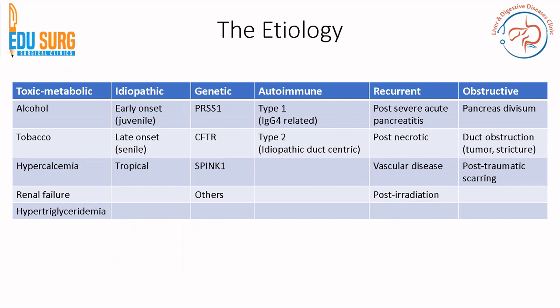The original TIGAR-O classification of the etiology of chronic pancreatitis still holds true: toxic-metabolic etiology including alcohol and tobacco; idiopathic etiologies including tropical pancreatitis; genetic mutations; autoimmune pancreatitis which may be IgG4-related or idiopathic; recurrent chronic pancreatitis which can be post-necrotic or vascular; and finally obstructive chronic pancreatitis due to pancreas divisum, tumour, stricture, or post-traumatic causes.